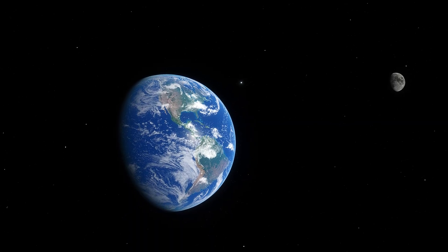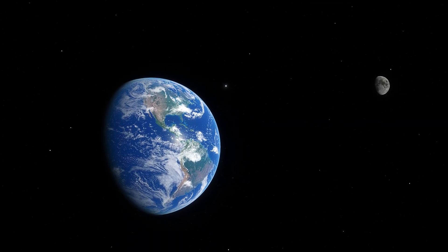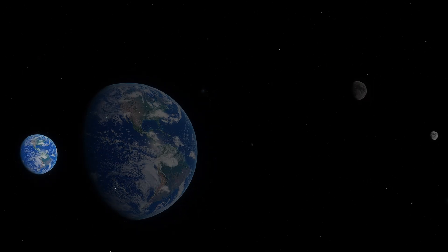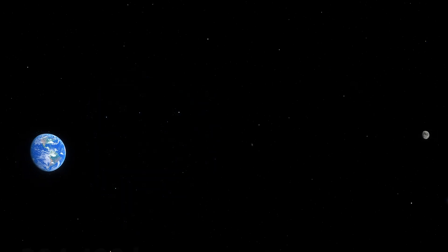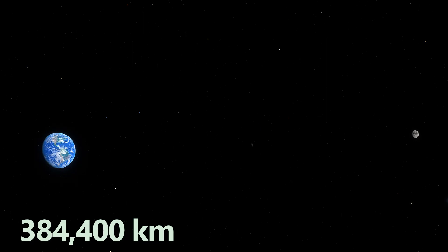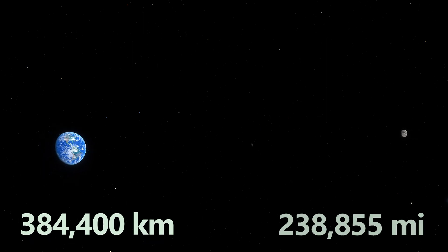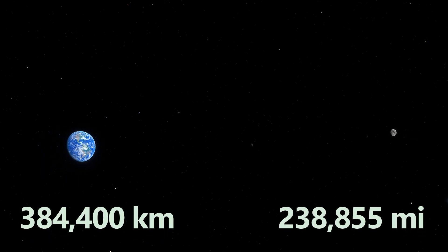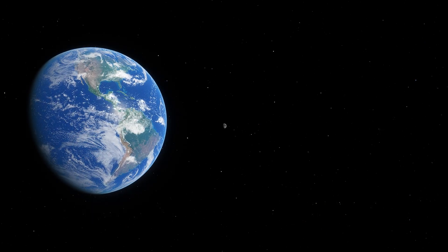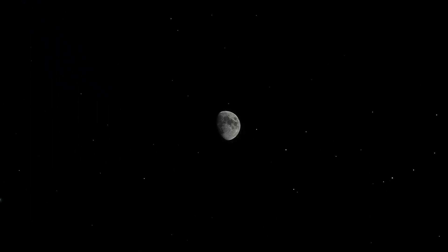It may seem like the Moon is rather close to Earth, but the distance is still enormous. The Moon orbits Earth at an average distance of 384,400 kilometers, which is about 238,855 miles, making it nearly a three-day journey for missions like the Apollo flights.